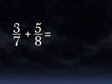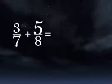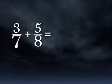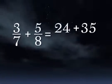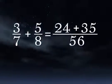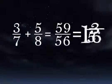It's wordy to say, but easy to show. 3 times 8 plus 5 times 7 over 7 times 8. That's 24 plus 35 over 56, which equals 59 over 56, which we convert to a mixed number.